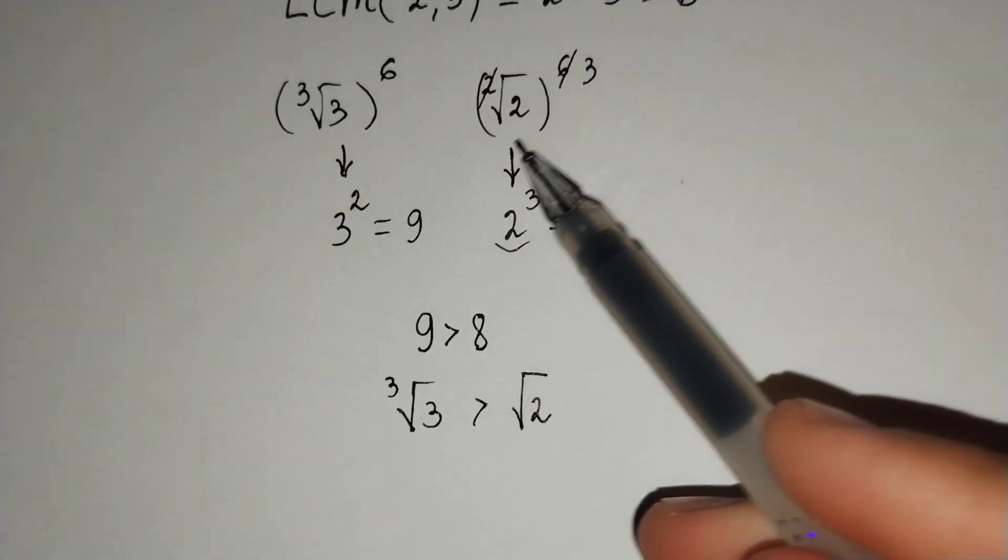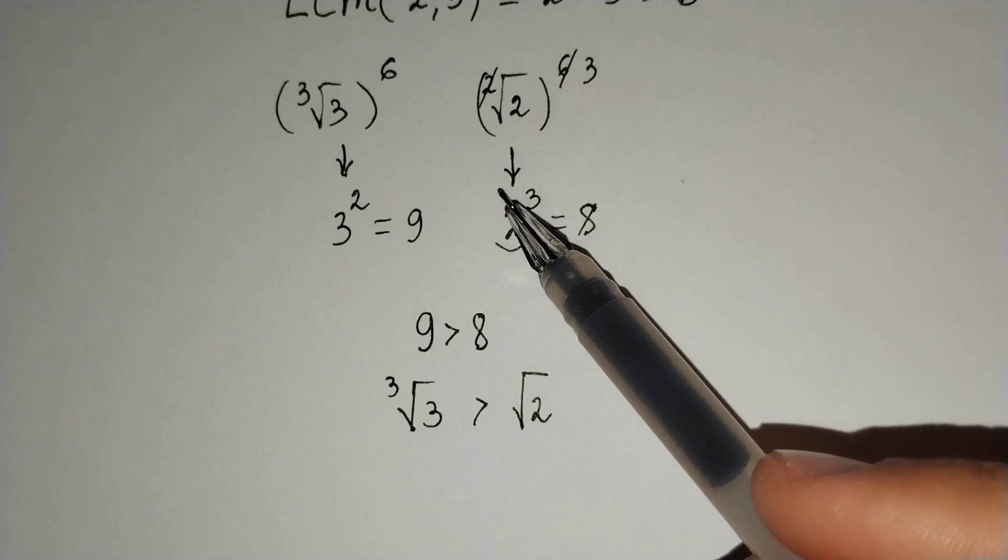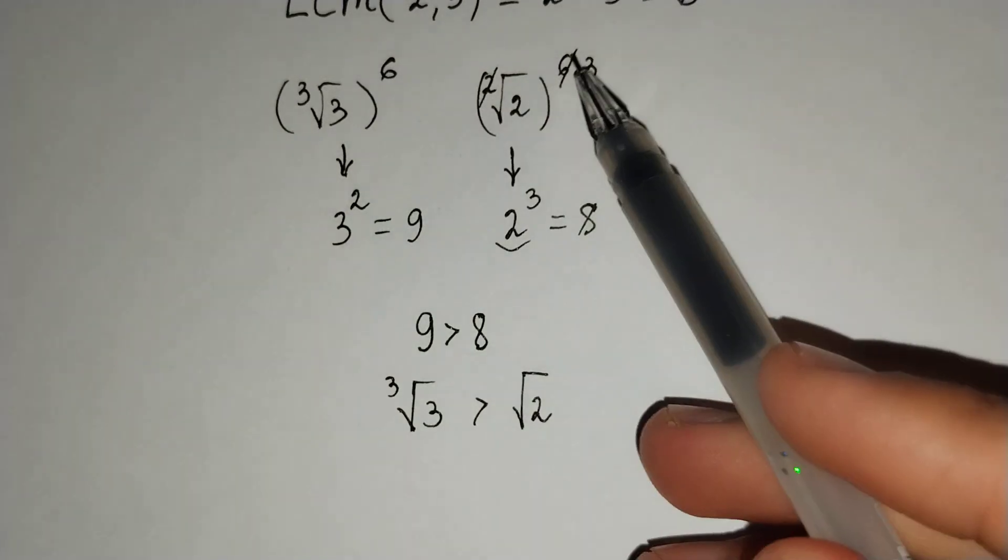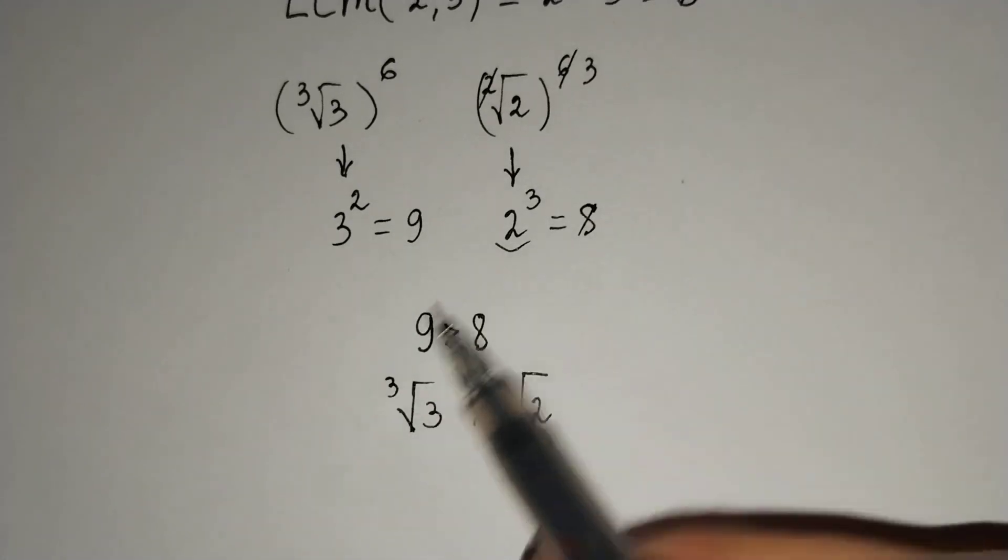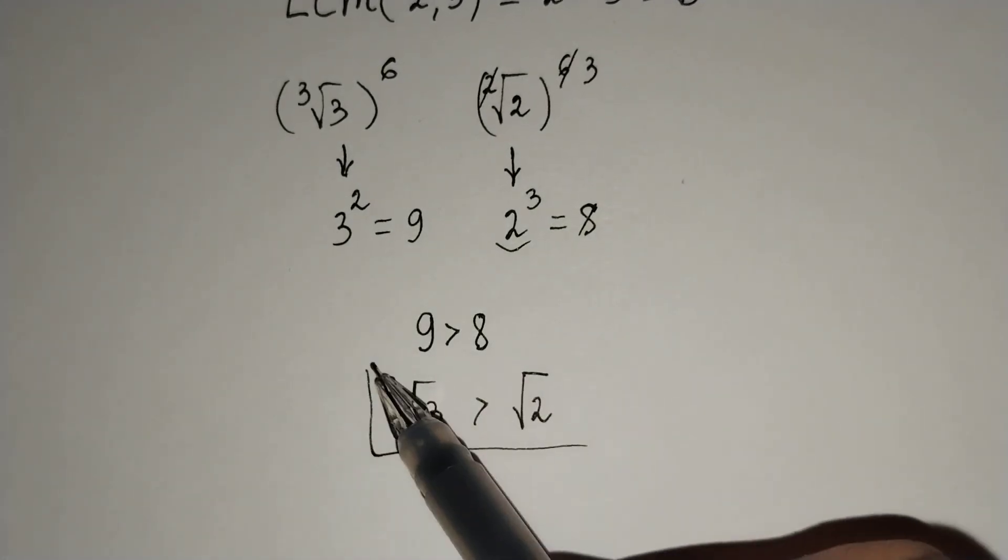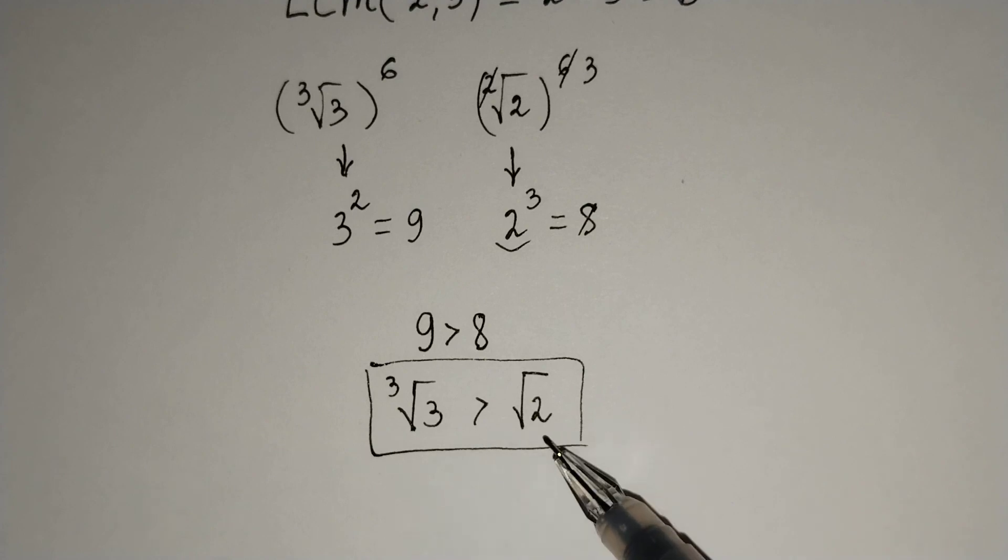Both radicals are positive and we raised each side to the sixth power. That's why the answer will remain the same. The cube root of 3 is bigger than the square root of 2.